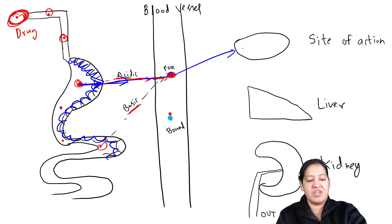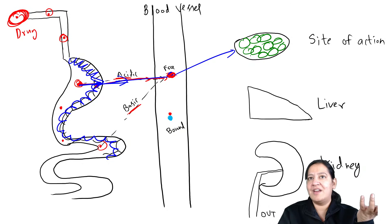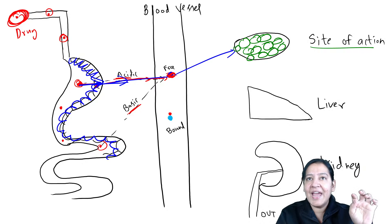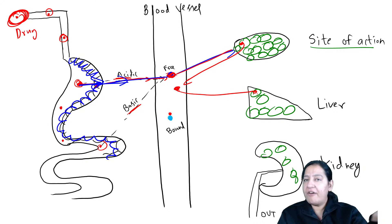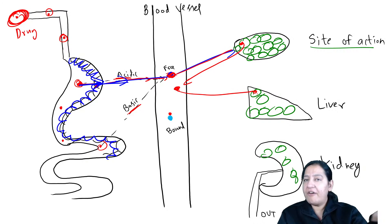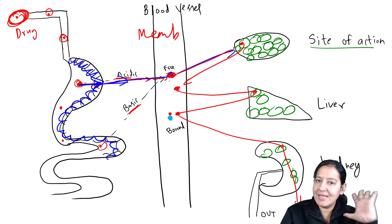After entering the blood, the drug goes to its site of action — which could be brain, intestine, kidney, liver, or heart depending on the disease. Here also the drug enters inside the cell, shows its action, and comes back out. The liver and kidney are also made of cells. In the entire process, the drug is crossing the cell membrane multiple times — during absorption, distribution, metabolism, and excretion. This is known as drug transport.